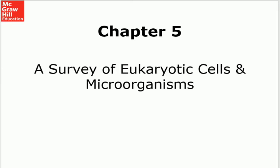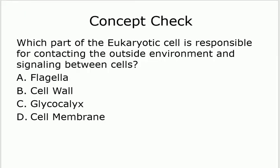Chapter 5: eukaryotic cells. This is a concept check — we've talked a little bit about eukaryotic cells before. Which part is responsible for the coating from outside? The glycocalyx.